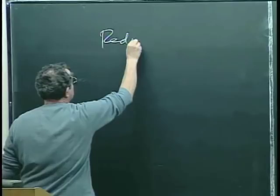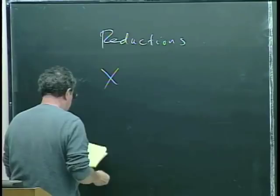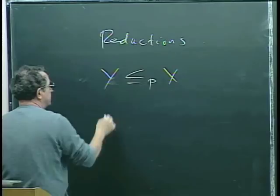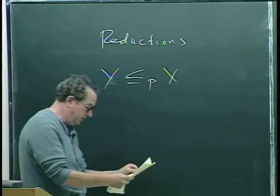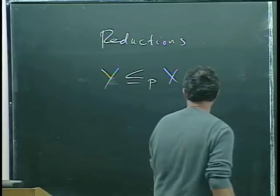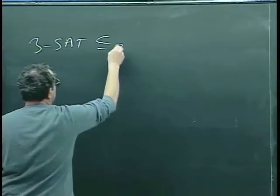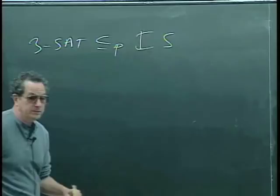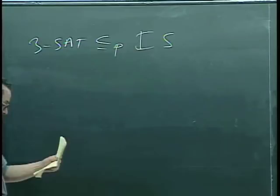Last time we were doing reductions and explained what it meant for a problem Y to reduce in polynomial time to a problem X. I ended last time with another example: I was going to show that the problem 3SAT reduces in polynomial time to independent set. Last time we looked at the independent set problem, and we also defined what 3SAT is.